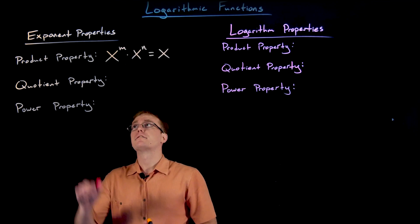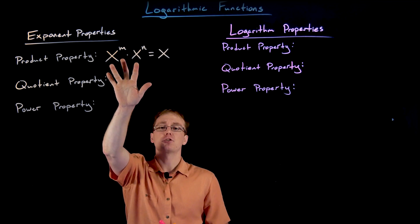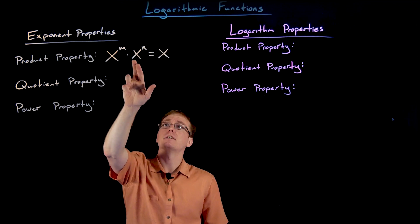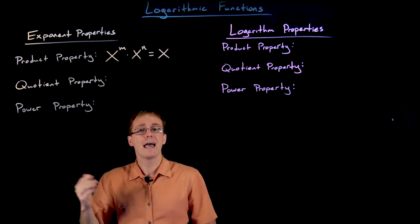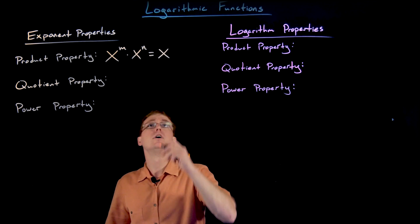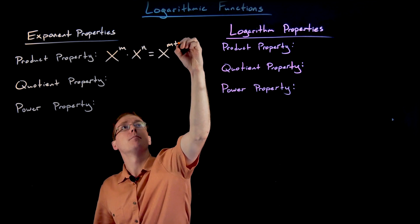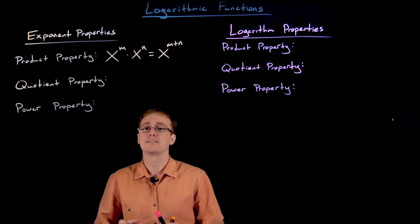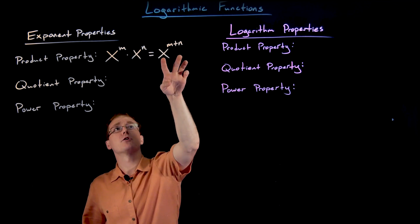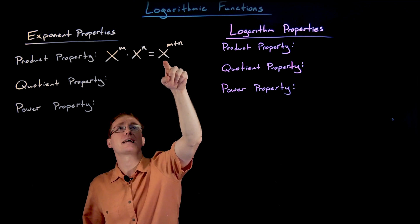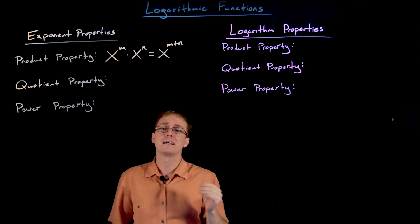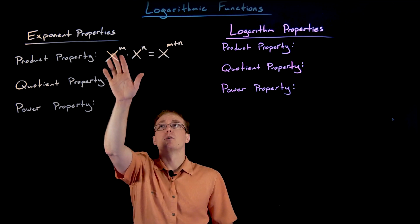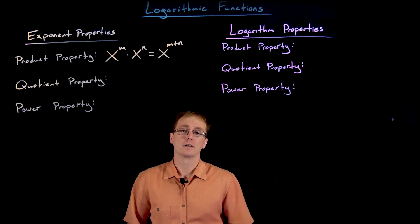The product property for exponents says that if we have two exponentials multiplied together with the same base — one raised to the power of m and the other raised to a different power n — then we can write this as a single exponential raised to the power of m plus n. So if you multiply exponentials together you can add their exponents. We can also use this in reverse: if we have x to the power of m plus n, we can break it up as x to the m times x to the n. This property works no matter what m and n are equal to.